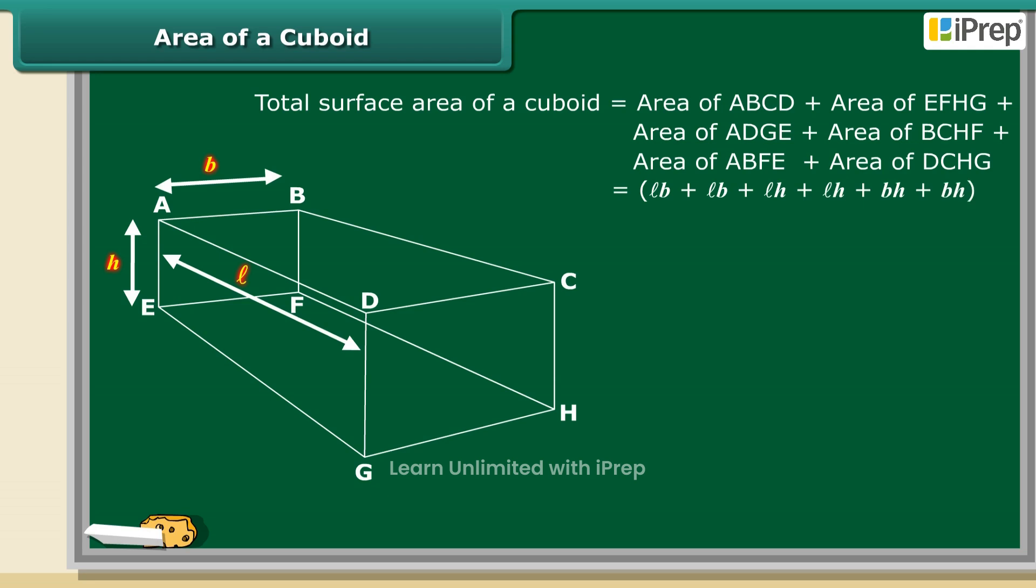Therefore, total surface area of a cuboid is equal to 2 into LB plus LH plus BH.